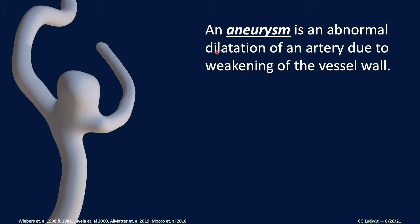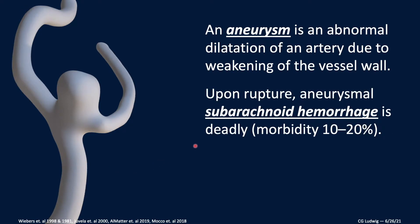An aneurysm is an abnormal dilatation or outpouching of an artery due to the weakening of the vessel wall. Here's a volumetric reconstruction of a real patient aneurysm branching off from its parent cerebral vasculature. The scary part about aneurysms is that when they rupture, the resultant brain bleed is called subarachnoid hemorrhage, and it is quite deadly still today, carrying a morbidity reported between 10 and 20% despite advances in management.